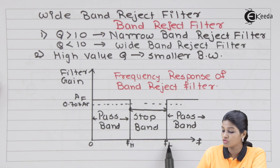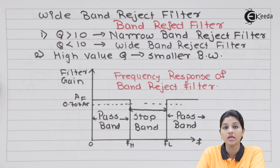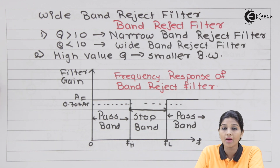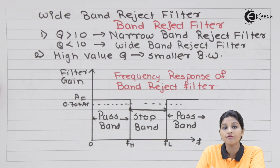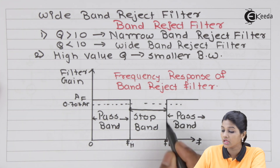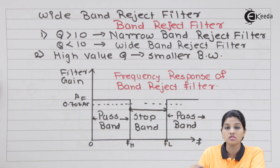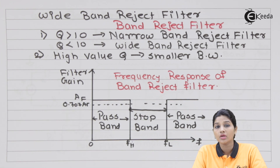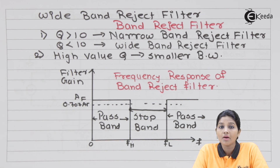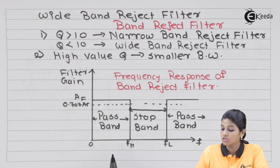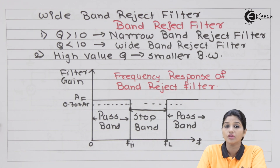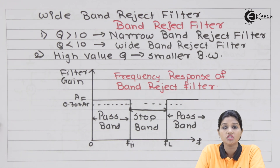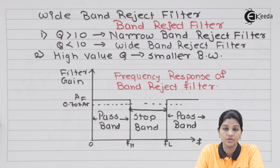In the range of frequencies from FH to FL, the gain remains 0 and that band is attenuated by the filter. At F equal to FL, the filter gain increases again to AF. So the filter passes frequencies between 0 to FH and above FL, while the frequencies present between FH and FL are stopped or attenuated by the filter.